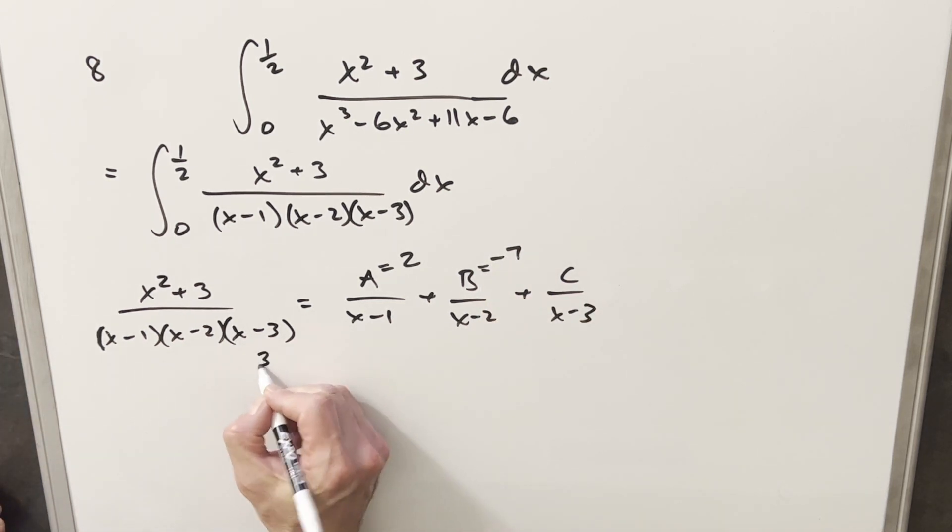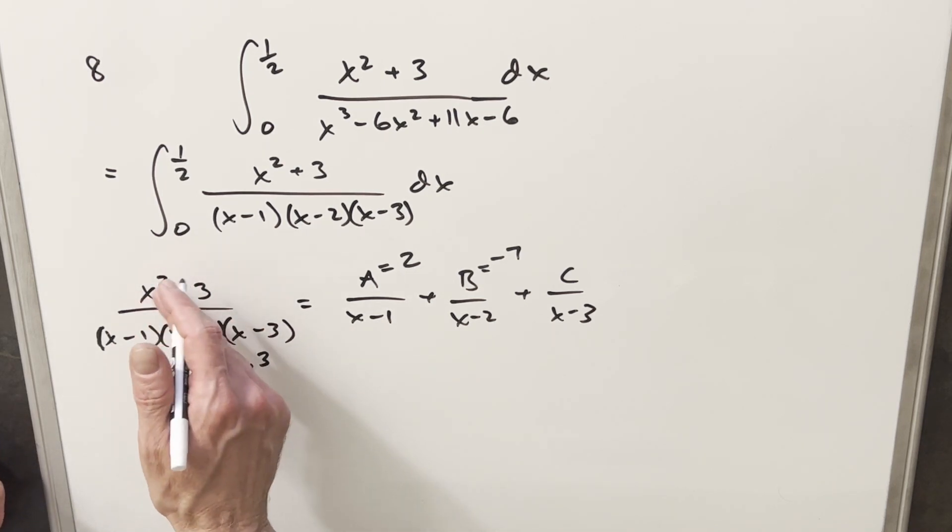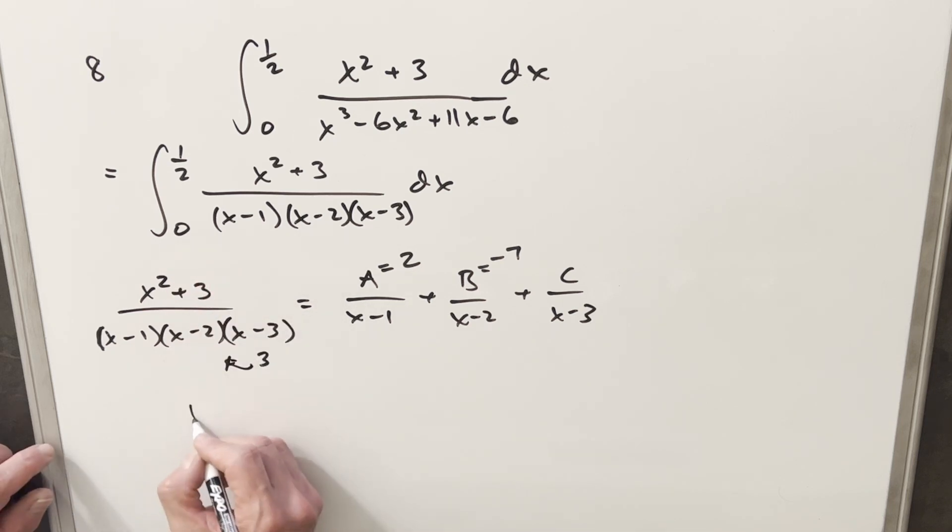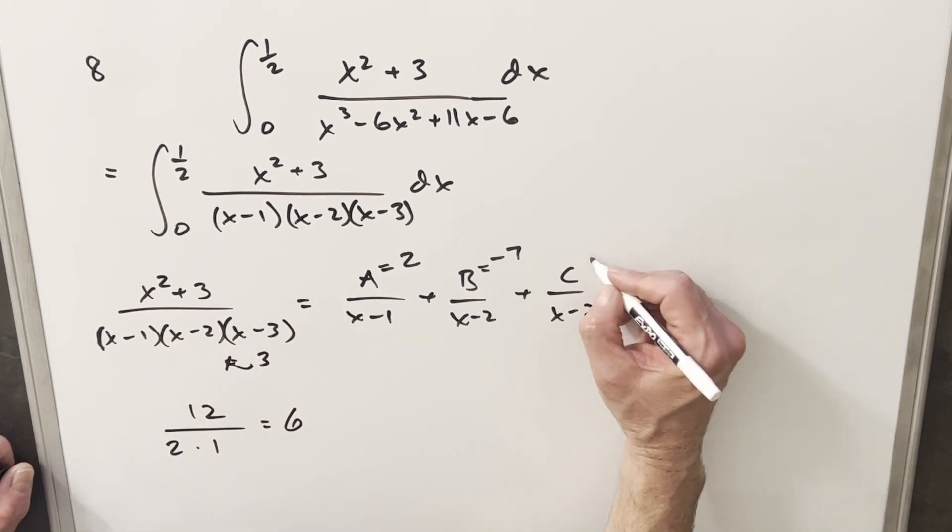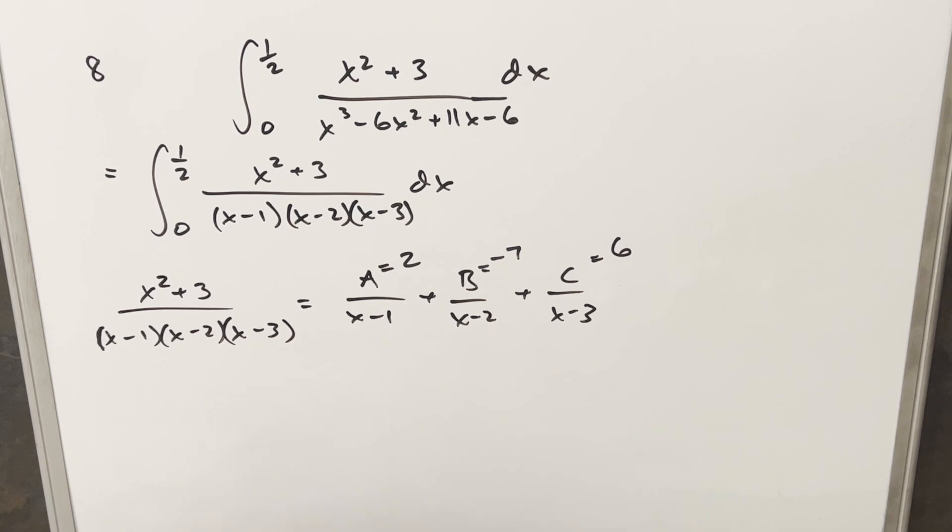Then last, I just need to plug in 3 here, cover this up, and plug my 3 in everywhere else. So in the numerator, we end up with 3² = 9 plus 3 is 12. 3 - 1 gives me a 2. 3 - 2 is just a 1. 12 divided by 2 is 6, and that's my C value. So now we have these constant values here. I'm just going to take all this, put it back into the integral, and we'll continue from there.